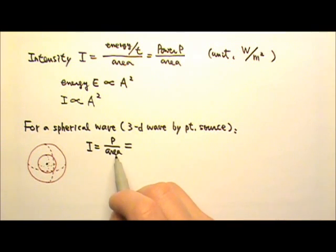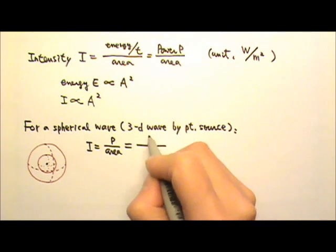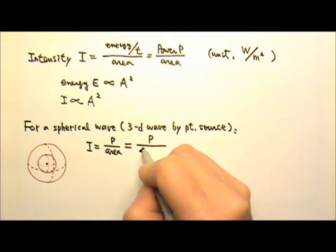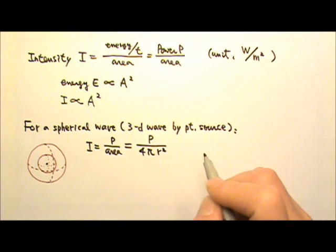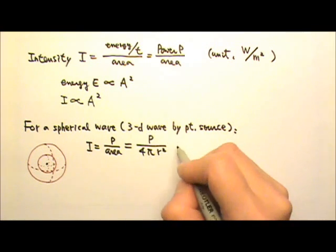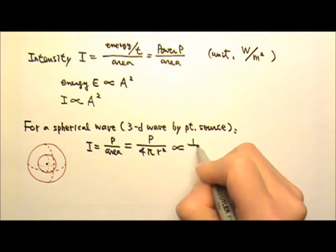So for a spherical wave, a three-dimensional wave produced by a point source, the intensity I, power divided by area, would be power divided by the area of spheres, which is 4πr². So for the same power, and the 4π of course is constant, this intensity would be proportional to 1 over r².